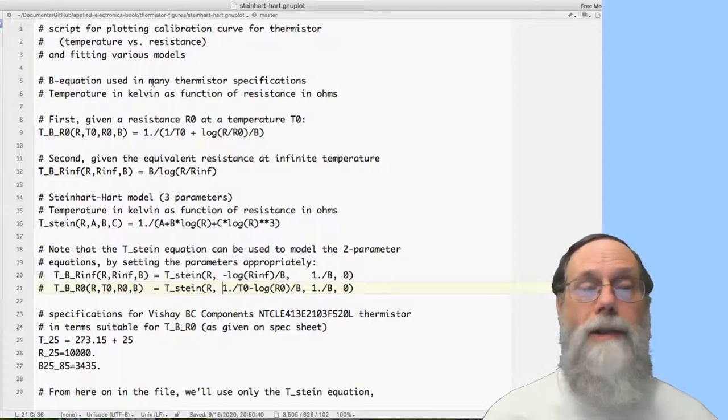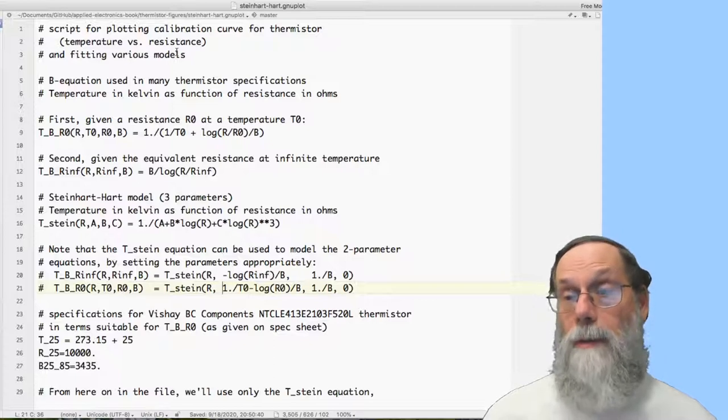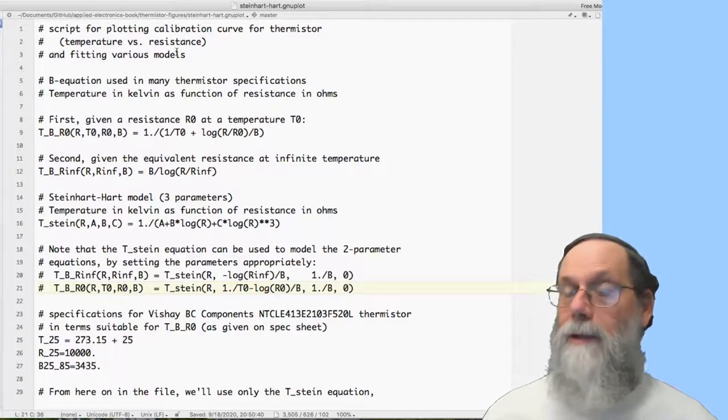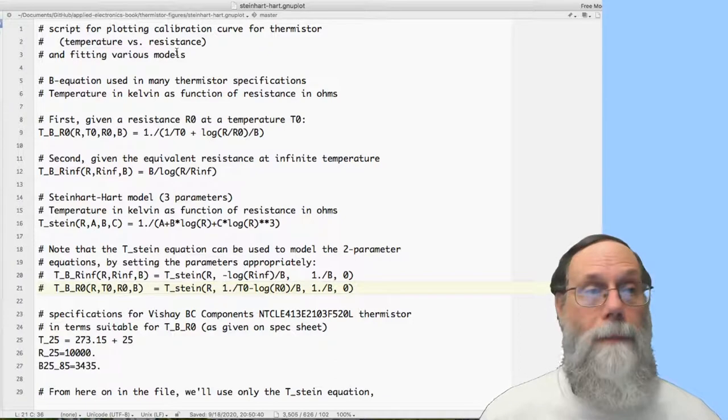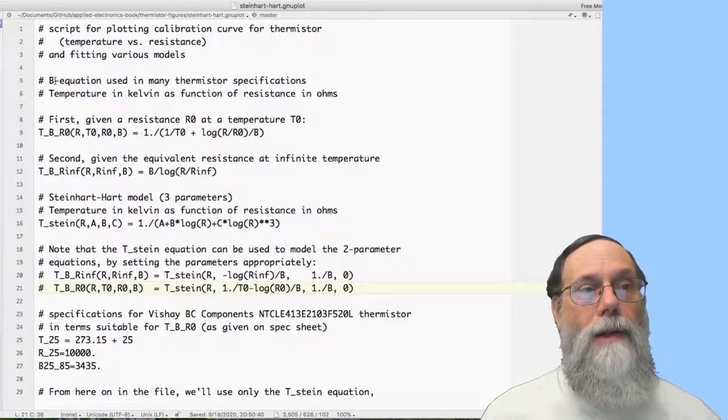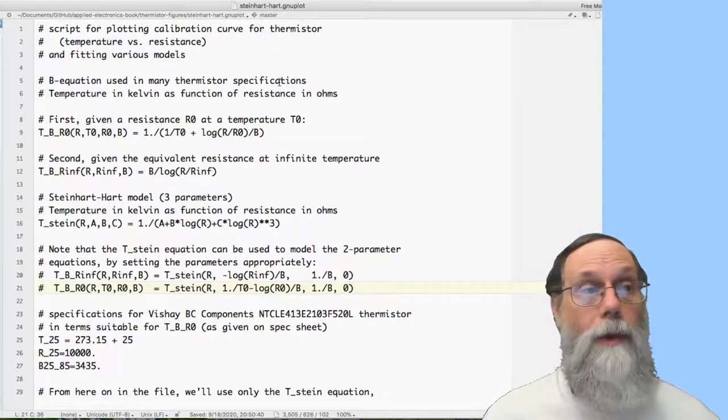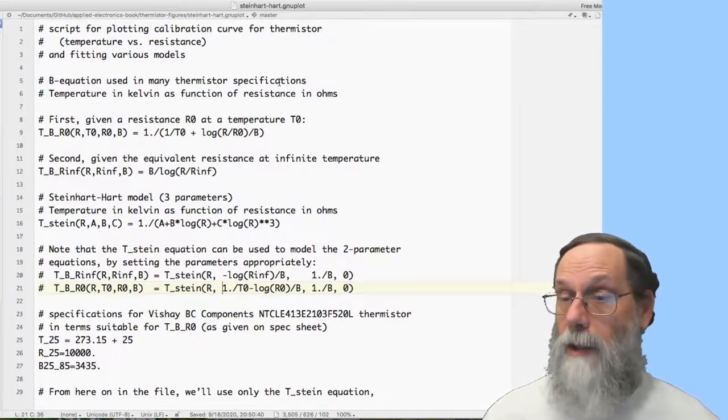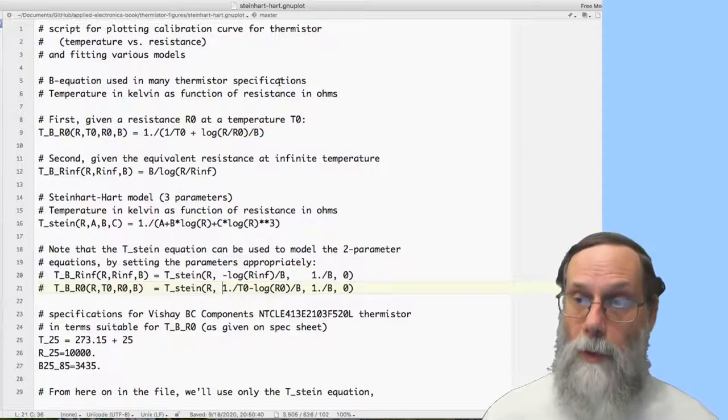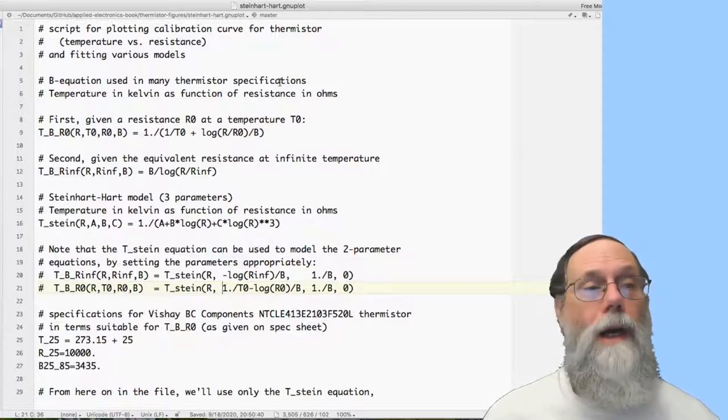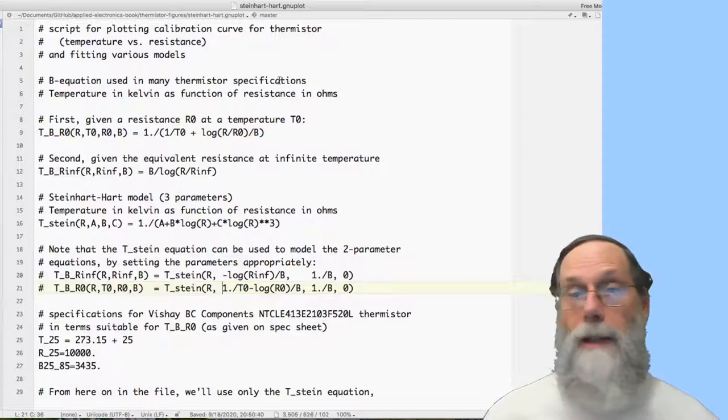So again, I start with some commentary about what the script is about. Again, that's so that when I come back to it eight years later, I don't have to try and guess from sort of randomly named things what's going on. All right, so I'm saying that the B equation is used. That's one that we give in the book. We also have the Steinhardt-Hart equation, which is a little bit more sophisticated in its fitting. And this script will be able to handle either one.